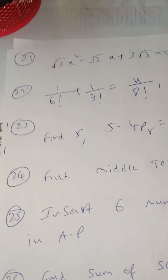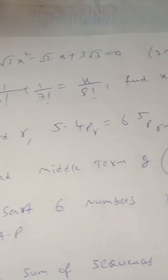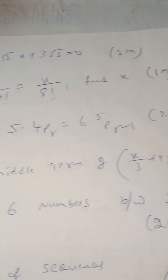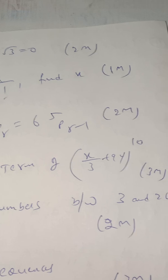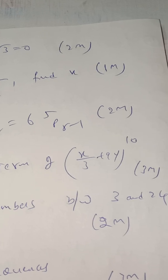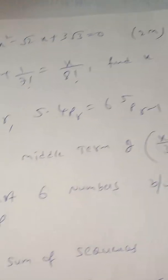Another important last-minute revision question from binomial theorem: find the middle term of (x/3 + 9y)¹⁰. This is a binomial theorem question for the last minute revision of 1st PUC.